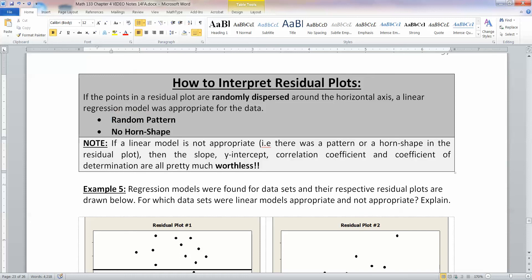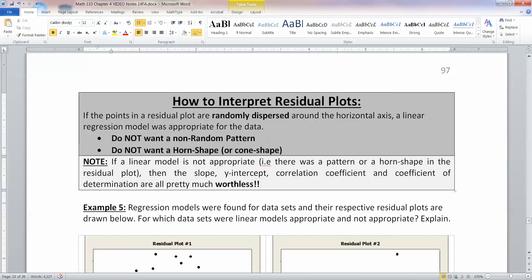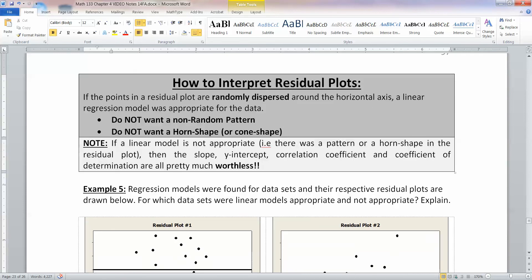You want a random pattern, and you want no horn shape to it. No cone or cone shape. If you see a horn shape or a cone shape, that's no good to you. So we do not want a non-random pattern. We do not want a horn shape or a cone shape. Those are the things we want. We want a random pattern. We do not want a non-random pattern. We do not want a horn shape.